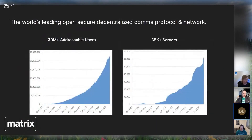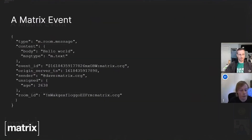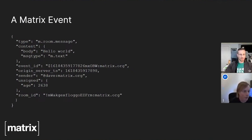VoIP has been in Matrix since way back at the end of that graph, back in 2014. In 2019 and 2020 we decided to give it an overhaul to make it more robust and reliable. So, what does a Matrix event look like? It basically looks like this — you've got a type, some content, a body inside that content, a sender, and a room ID.